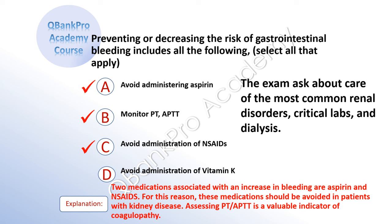The correct answer is A: avoid administering aspirin. B: monitor PT and APTT. And C: avoid administration of NSAIDs. Explanation: Two medications associated with an increase in bleeding are aspirin and NSAIDs. For this reason, these medications should be avoided in patients with kidney disease. Assessing PT and PTT is a valuable indicator of coagulopathy. The exam asks about care of the most common renal disorders, critical labs, and dialysis.